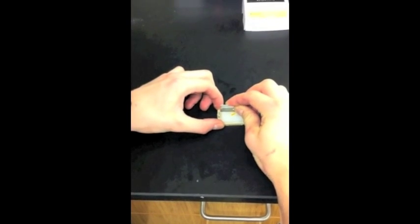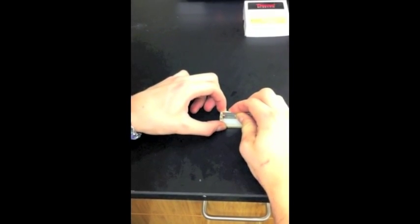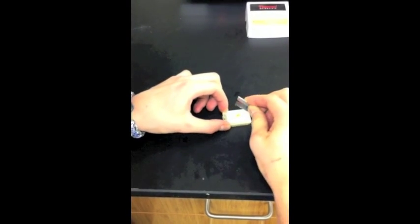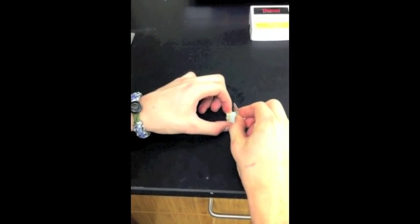To provide yourself with guidelines for removing excess paraffin, score the block with a razor in a trapezoid shape. The widest portion should be at the bottom.